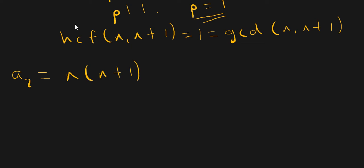So how many distinct prime factors does the product a2 actually have? Well, as we've just seen, n and n plus one don't share any prime factors. If n and n plus one don't share any prime factors, then n has at least one prime factor.